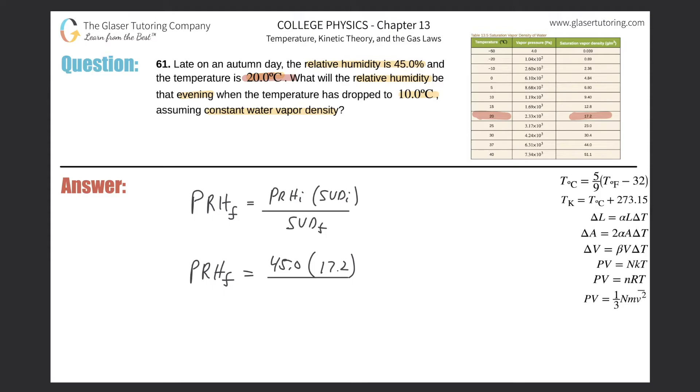And then the temperature now drops, right? It went down to 10 degrees Celsius. So now what you have to do, go to your table, find 10 degrees, and then find that saturation vapor density because that's the final saturation vapor density. And then you plug that in. So this is going to be 9.40.